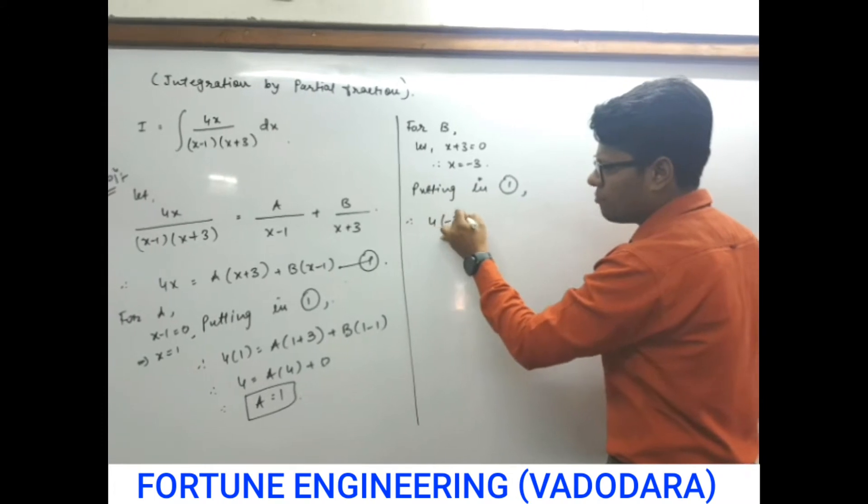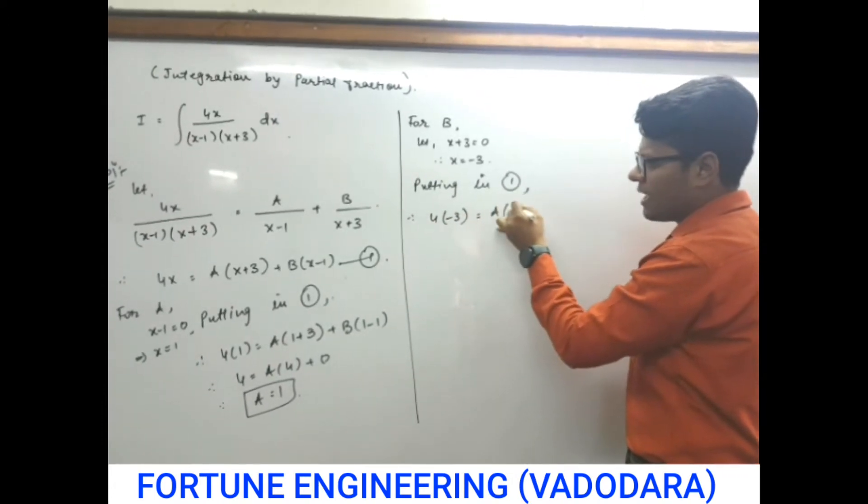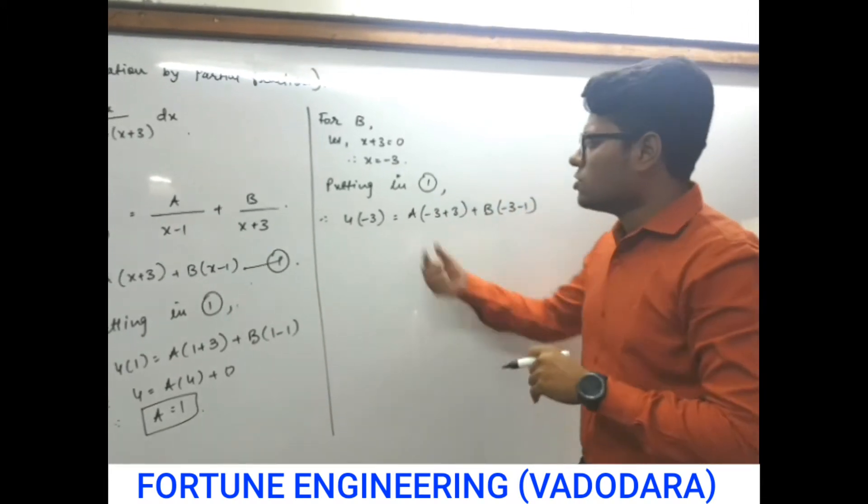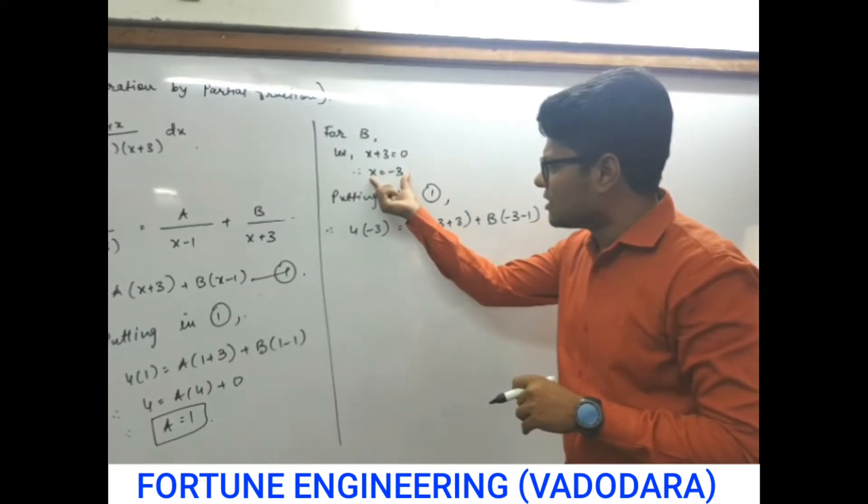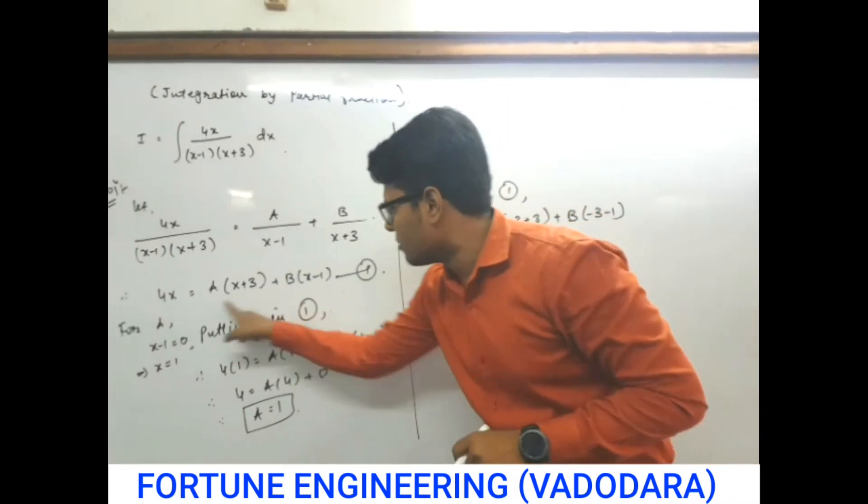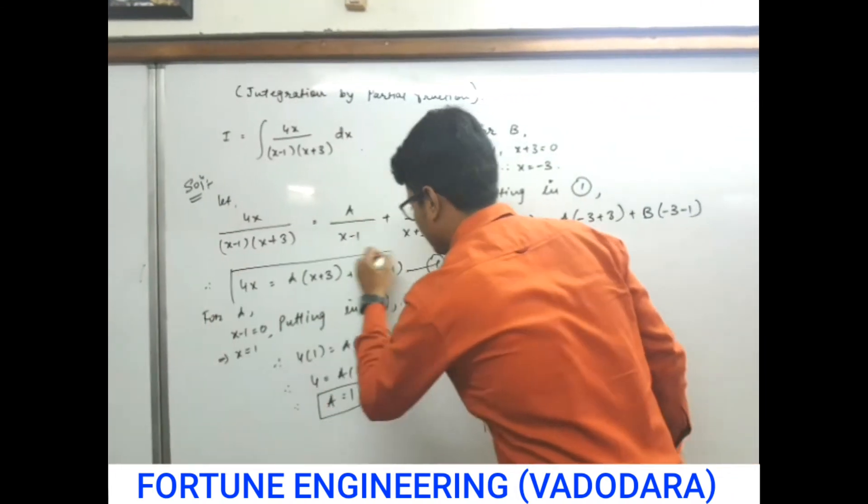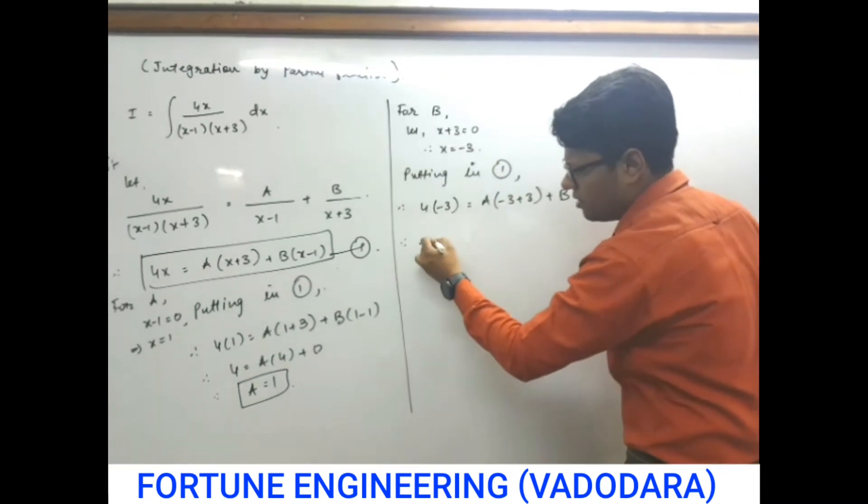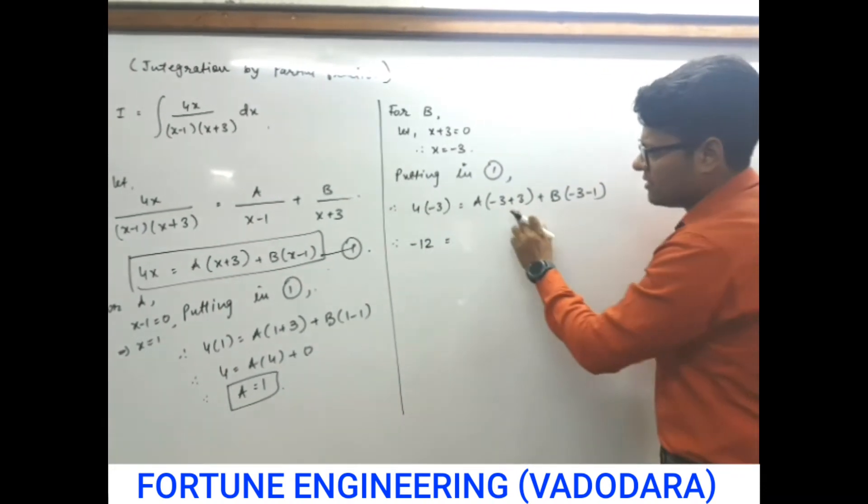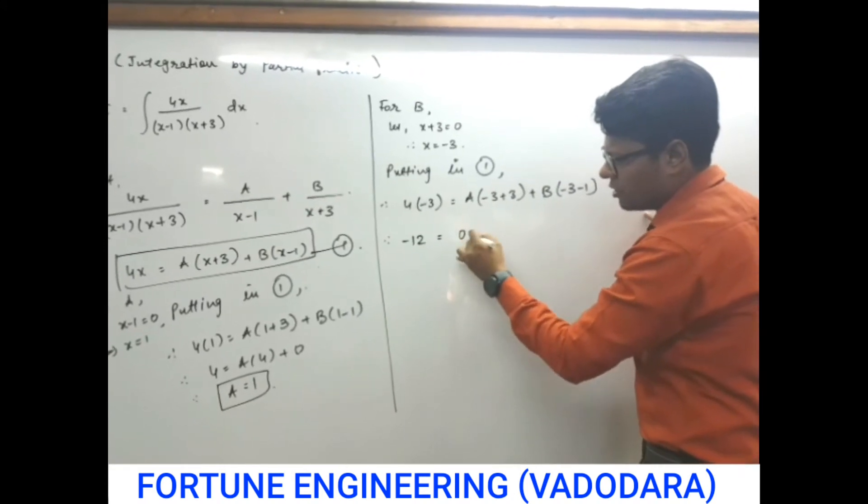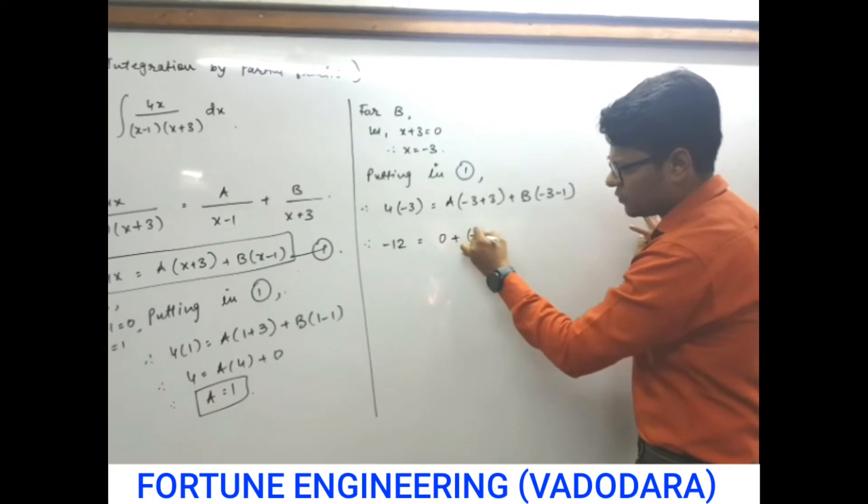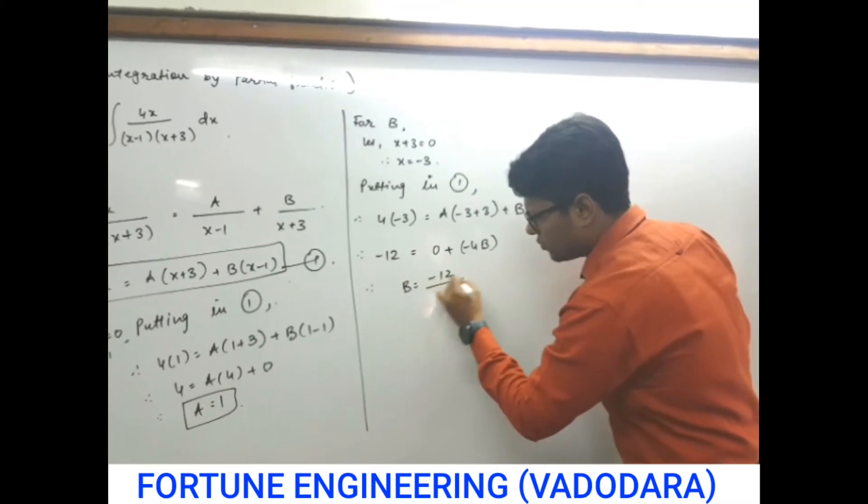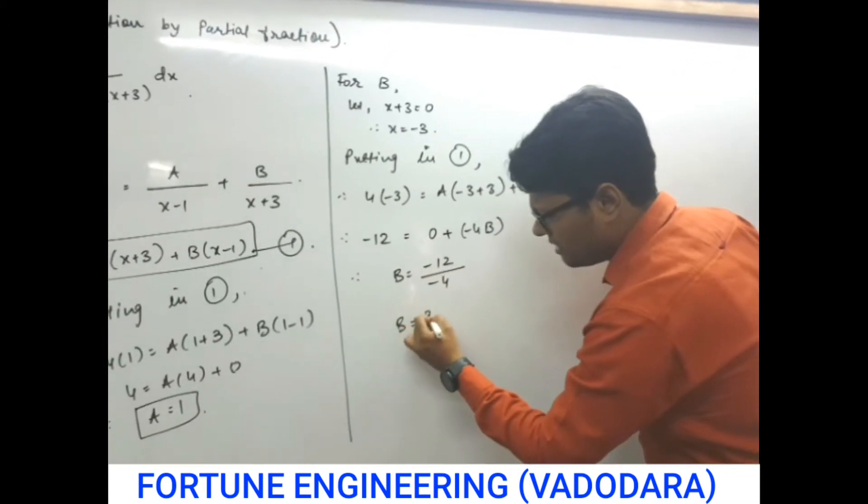We will put the value of x as minus 3 into equation number 1. So 4 into minus 3, that is equal to a minus 3 plus 3, b minus 3 minus 1. We are putting this x is equal to minus 3 into this equation number 1. This minus 3 plus 3 becomes 0. So the whole term will become 0. And this is the minus 4b. So b will become minus 12 upon minus 4. So b will become 3. The value of b is 3.